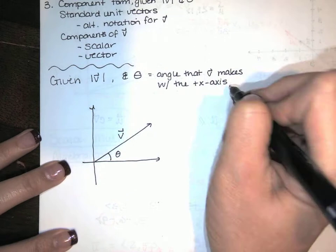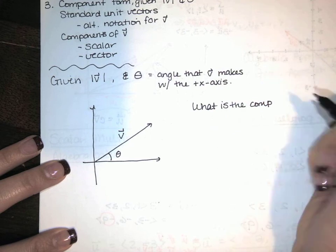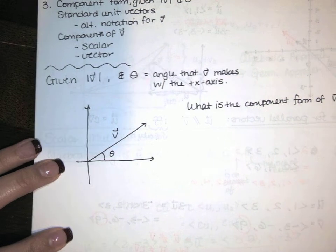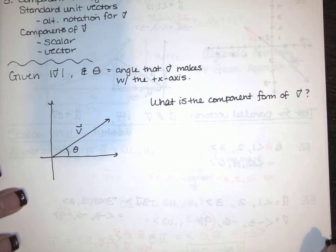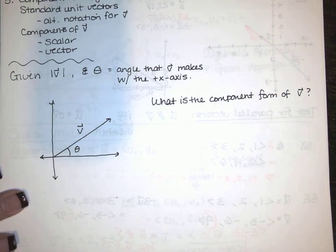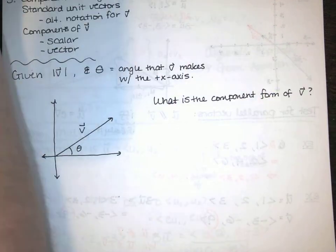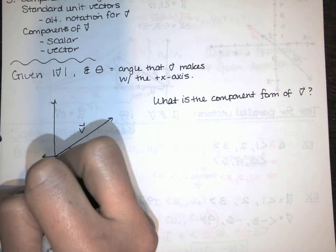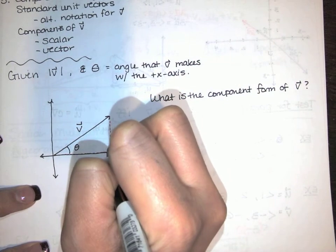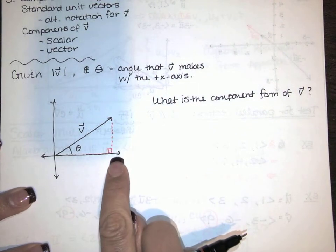The question becomes: what is the component form of v? Well, we can derive it geometrically just using what we know about right triangle trig. We can also think of this as rescaling a vector that's on the unit circle, so we're going to look at it both ways. First, let's derive it using right triangle trig. We already know that the x component of v is this length and the y component of v is this length, so I can draw a right triangle with one side parallel to the x-axis and another side parallel to the y-axis.